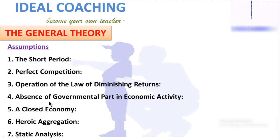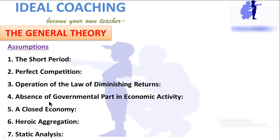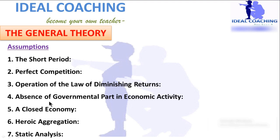The last assumption was static analysis. The general theory does not trace out the effect of the future on present economic events clearly. Its analysis remains comparatively static, though at times Keynes introduced expectations in his analysis. But still, it is a comparatively static analysis.